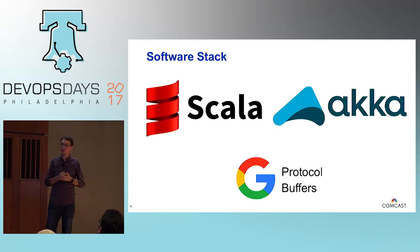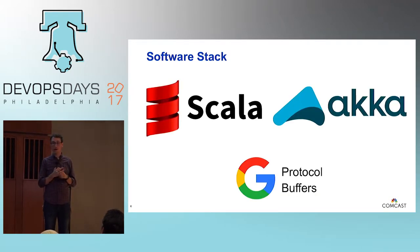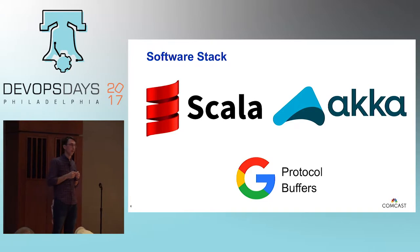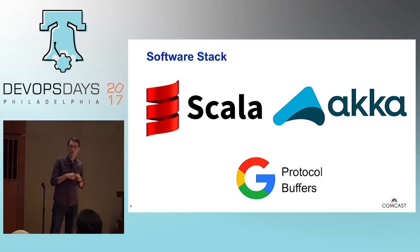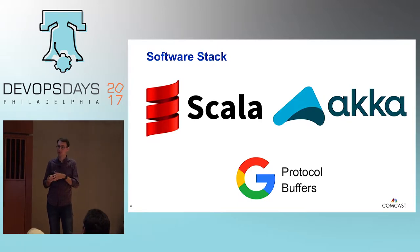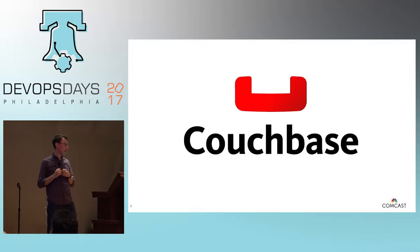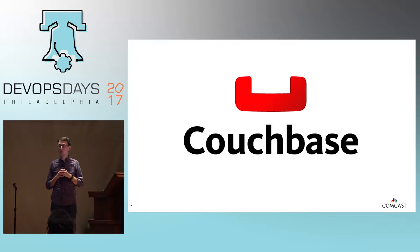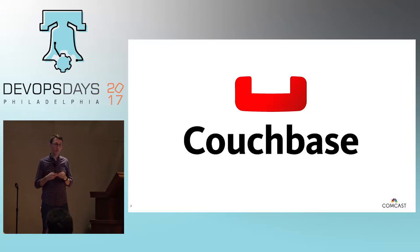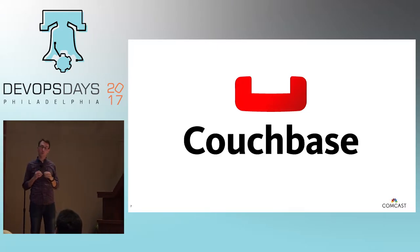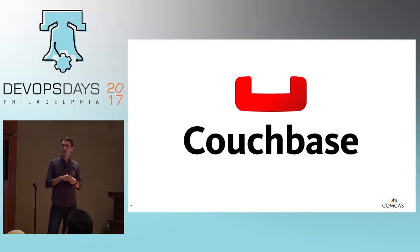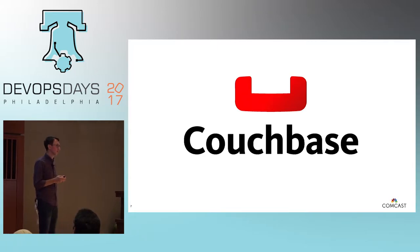Software stack wise, the application is written in Scala. We're using Akka Actors and Google protobufs for serializing data between the different adapters. Some of those decisions were made before I joined the team. The nice thing about protobufs is it does allow us to write the adapters in different languages if we wanted to, moving away from Scala. For stateful data, we're storing subscriber details and topics in Couchbase. Since it's a document store, we don't have to worry about schema changes very much, and Couchbase has been pretty stable for us.